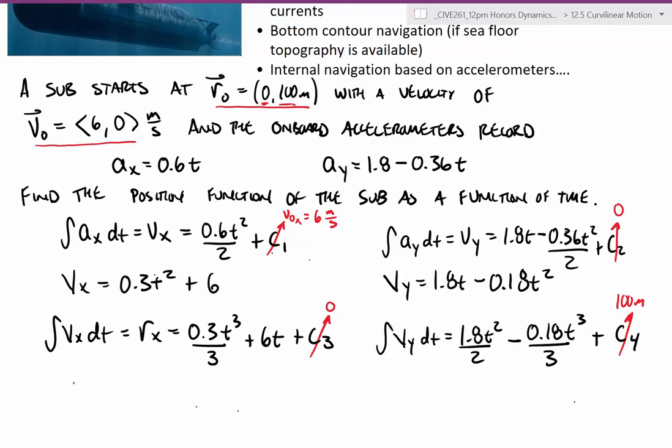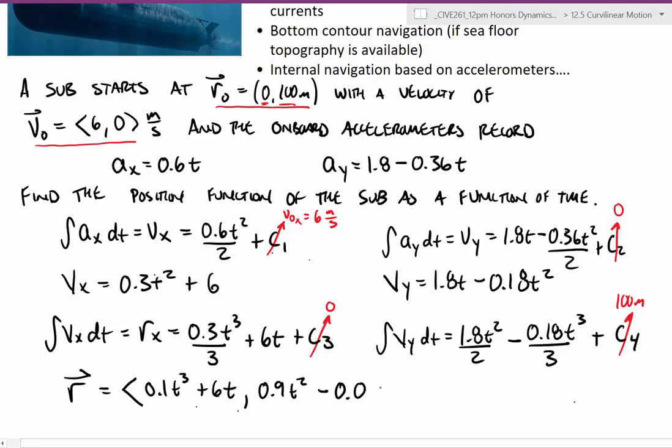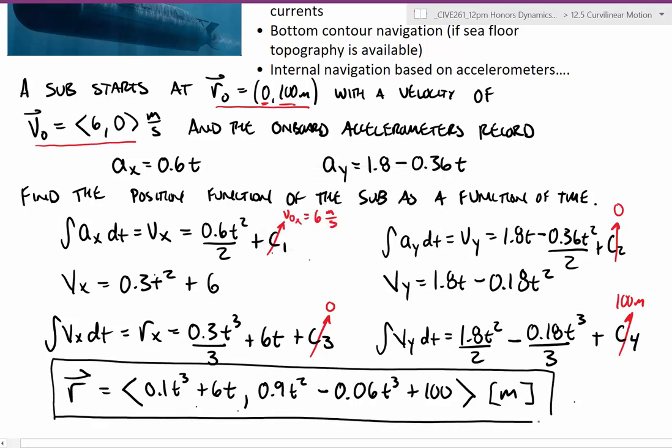And we can write those final functions. I'm going to combine these into one vector equation. So r is equal to 0.1t cubed plus 6t comma 0.9t squared minus 0.06t cubed plus 100. And so this function, all of the different terms would be in meters, and there would be my vector equation. The first term, the x term times i hat, the second term there times j hat. That concludes this example. Hope that was valuable.